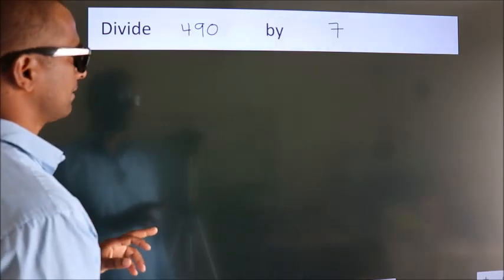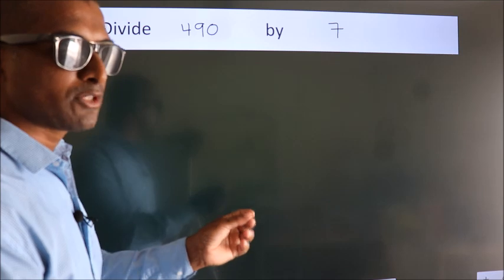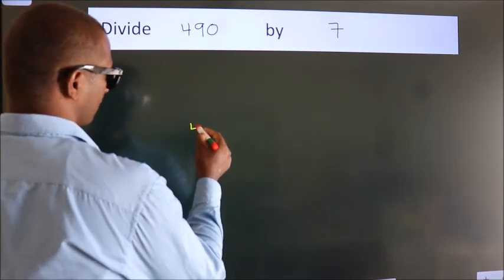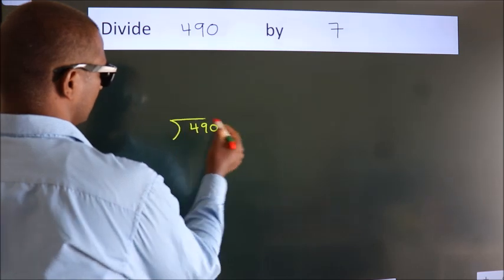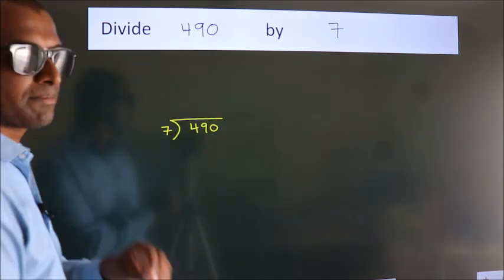Divide 490 by 7. To do this division, we should frame it in this way. 490 here, 7 here. This is your step 1.